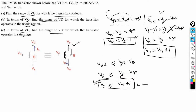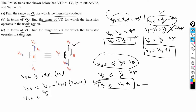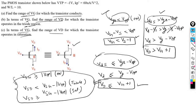Apart from these three conditions, we can use a different set of equations. For the on condition, we can write VSG greater than or equal to the magnitude of VTP. For the triode region, we can write VSD less than VSG minus the magnitude of VTP. We can use either set of equations to find the mode of operation of a PMOS transistor, and our answers will remain the same. These three results are the answers for the given question.